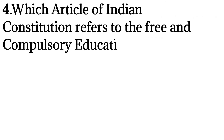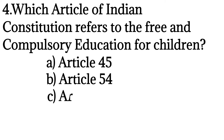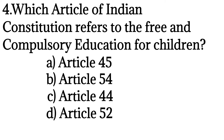Which article of the Indian Constitution refers to free and compulsory education for children? Options: Article 45, Article 54, Article 44, Article 52. The correct answer is Article 45. Article 45 refers to free and compulsory education for children.